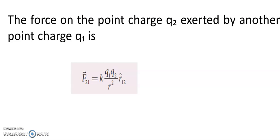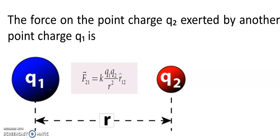Coulomb's law in vector form: the force on point charge Q2 exerted by another point charge Q1 is written as F21 equals the proportionality constant times Q1 Q2 divided by R square, and then the unit vector R cap 12. This states that force is directly proportional to the product of the two charges Q1 and Q2, and inversely proportional to the square of the distance between them, R square. R cap 12 is a unit vector directing from point charge Q1 to charge Q2.